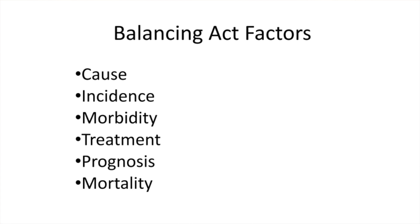Here are the factors we'll compare for these four diseases: cause, incidence, morbidity, treatment, prognosis, and mortality. Assessing just these six factors without getting into the details of any of the diseases enables us to easily weigh them against one another. So here's the chart we'll fill in — I'll explain each factor as it pertains to each disease as we go through them.